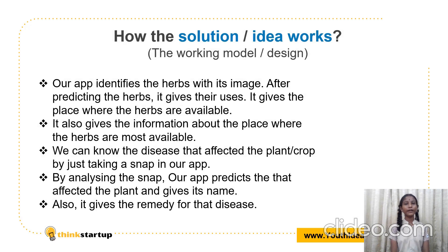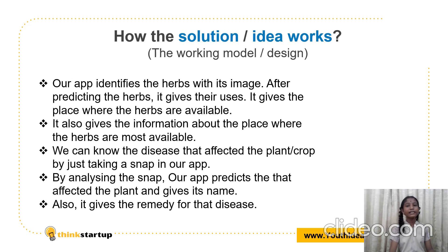Once we open the app, we can see two options on the home screen: one is 'Identify the Herbs' and the other is 'Identify the Plant Disease.' By clicking 'Identify the Herbs,' we can know the name of the herb by its picture — our app analyzes the picture and gives its name, uses, and most available places. By clicking 'Identify the Plant Disease,' our app analyzes the name of the disease by its picture and also gives the remedy we should take for that disease.